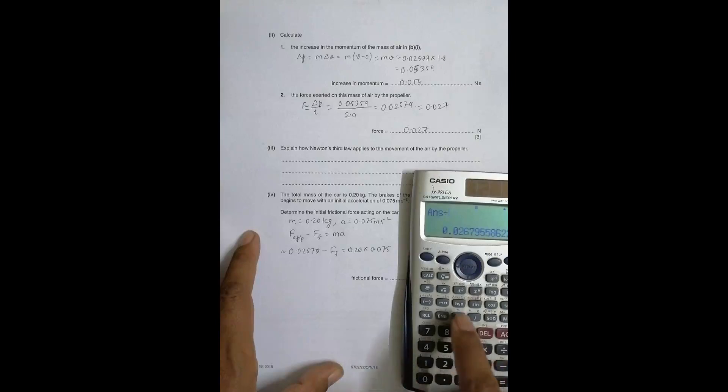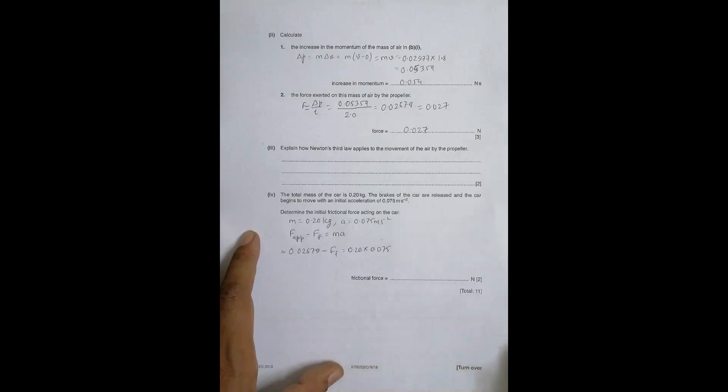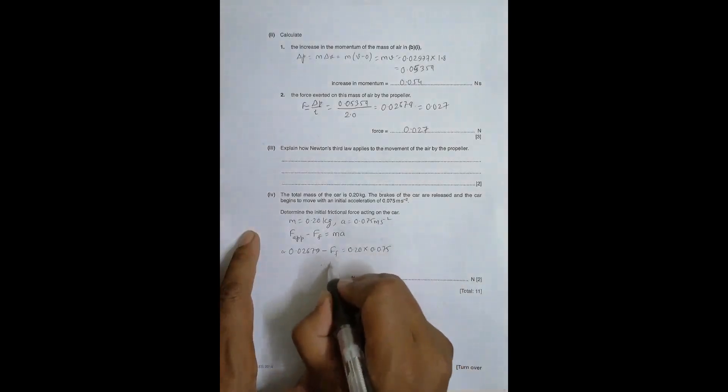So when I do the calculation it will be equal to this minus bracket of 0.2 into 0.075 bracket close.